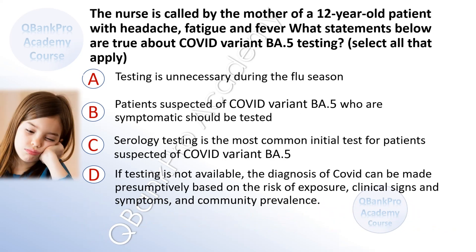The nurse is called by the mother of a 12-year-old patient with headache, fatigue, and fever. What statements below are true about COVID variant BA5 testing? Select all that apply. A. Testing is unnecessary during the flu season. B. Patients suspected of COVID variant BA5 who are symptomatic should be tested. C. Serology testing is the most common initial test for patients suspected of COVID variant BA5. D. If testing is not available, the diagnosis of COVID can be made presumptively based on the risk of exposure, clinical signs and symptoms, and community prevalence.